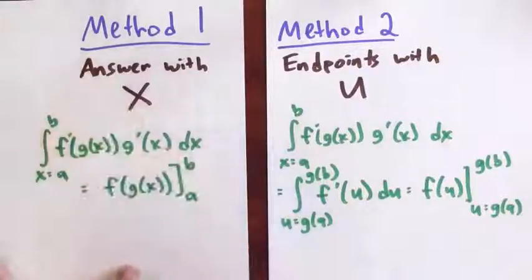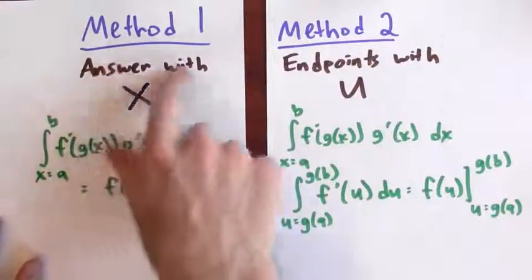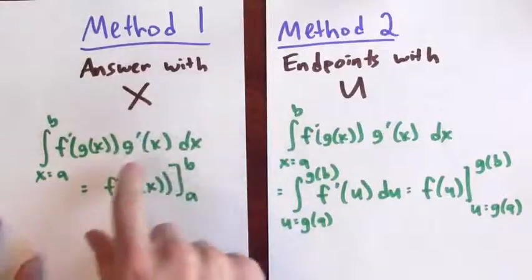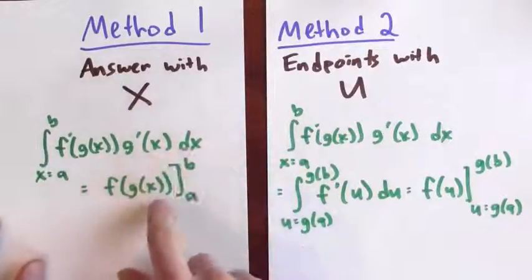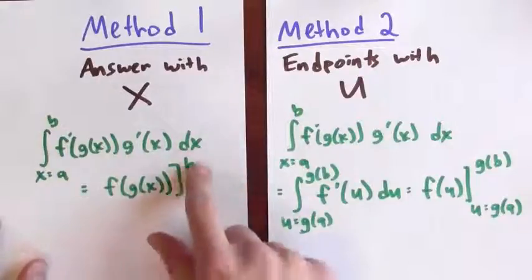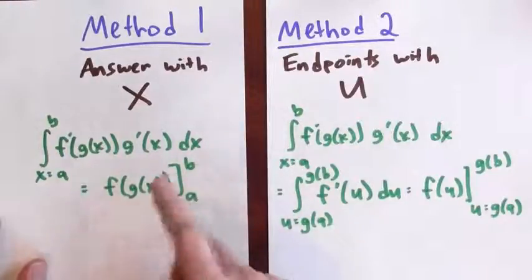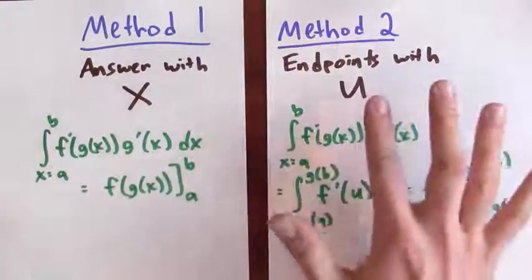Let's summarize these two different approaches. The first time I went through this problem, I found the antiderivative in terms of x. I wanted to integrate this, and I found an antiderivative, and then I just evaluated it at b and a and took the difference.